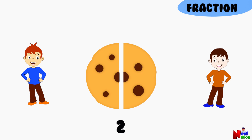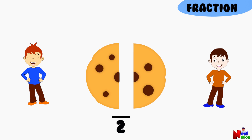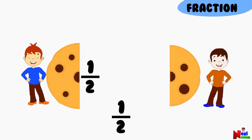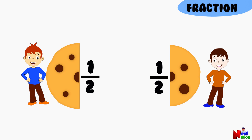Yes, you are right. Since you started with one whole cookie and split it into two equal parts, each friend gets one half of the whole cookie. In other words, each friend received a fraction of the whole cookie.